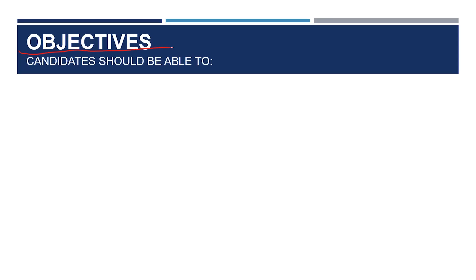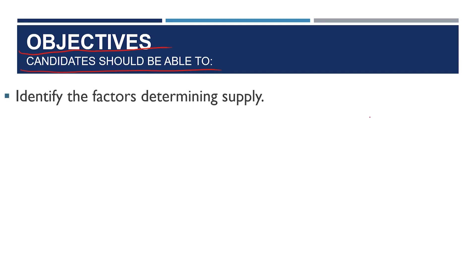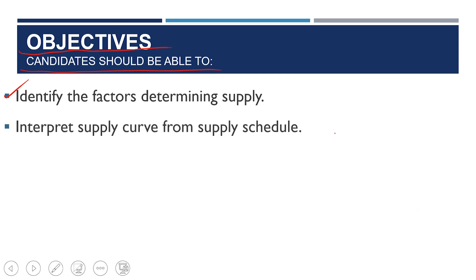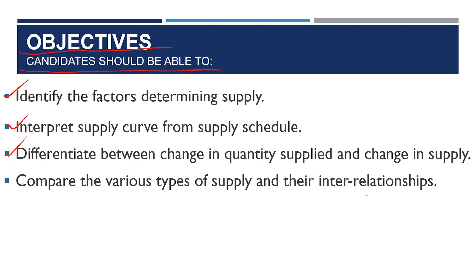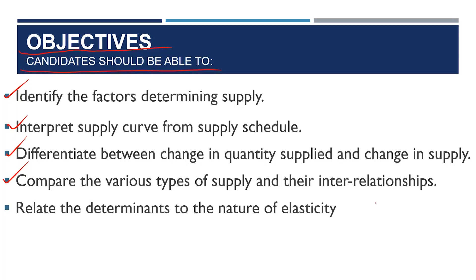On this note, we'll be looking at the objectives that, as students, we are required to know so that it will make an easy way for us. The first one is to identify the factors determining supply. Number two, interpreting supply curve from supply schedule. Number three, differentiate between change in quantity supplied and change in supply. Number four, compare the various types of supply and their interrelationship.